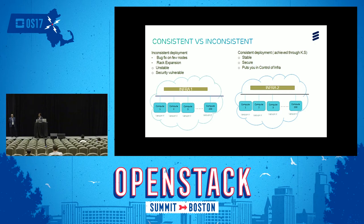On the other hand, if you see infra 2, we have the same number of computes deployed, but compute 1 is on version X, compute 2 is on version X, and the last compute is also on version X. All these computes are on the same version — this is a perfect example of consistent deployment. These types of deployments are more stable, more secure, and put you in control of your infrastructure.